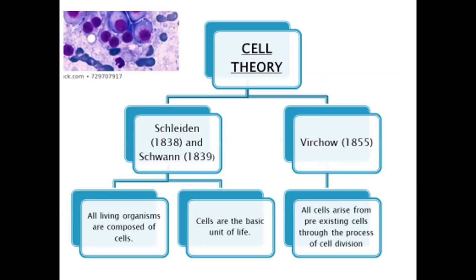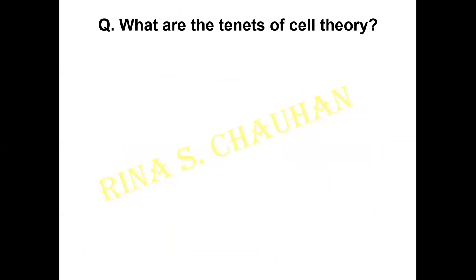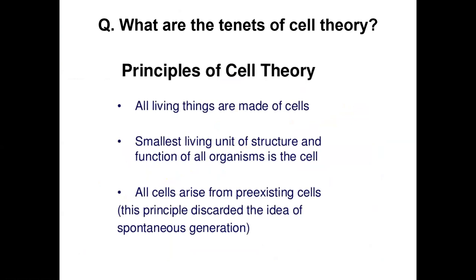Cell theory: two scientists Schleiden and Schwann gave this theory, which was further given an additional point by Virchow. The first point: all living organisms are composed of cells, or cells are the basic unit of life. The third point: all cells arise from pre-existing cells. The question usually comes — what are the tenets of cell theory? Tenets means principles. You can write: all living cells are made up of cells; the smallest living unit is the cell of any living organism; and cells come from pre-existing cells.